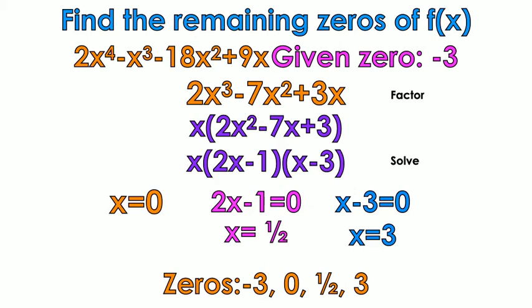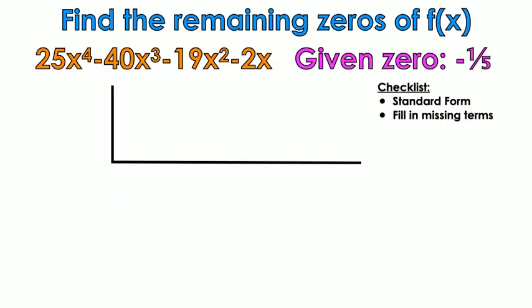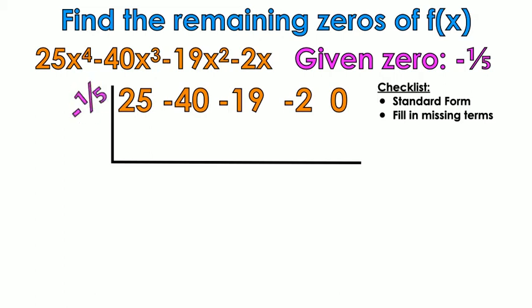Last example. In my humble opinion, I think that you should pause the video and you should do this example all on your own and see if you get the right answer. But I can't make you do that. Alright. We're going to pull out our coefficients. I put the 0 at the end because I'm missing a constant. So the 0 is at the end. I'm going to put the negative 1 fifth on the outside and we're going to start our process.